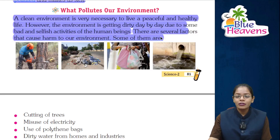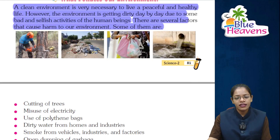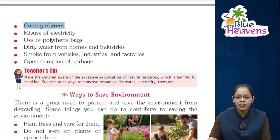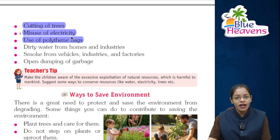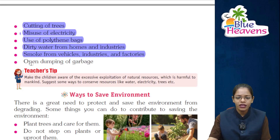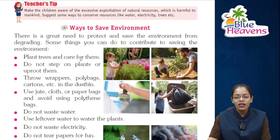There are several factors that harm our environment. बच्चों, images में कुछ factors दिखाए गए हैं: cutting of trees, throwing garbage at open places, use of polythene bags, and dumping of garbage in water bodies. अगर हम पेड़ काटेंगे तो air impure रहेगी। Misuse of electricity, use of polythene bags जो land को pollute करते हैं, dirty water from homes and industries जो water bodies में छोड़ा जाता है, smoke from vehicles and factories जिससे air impure होती है, और open dumping of garbage जिससे germs और mosquitoes आते हैं।